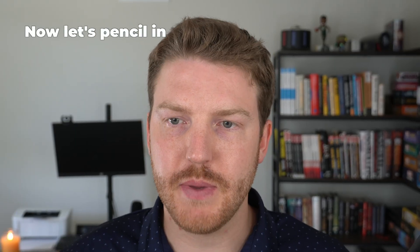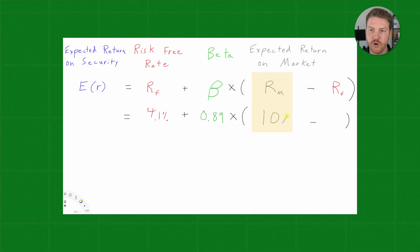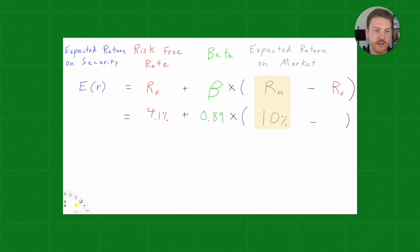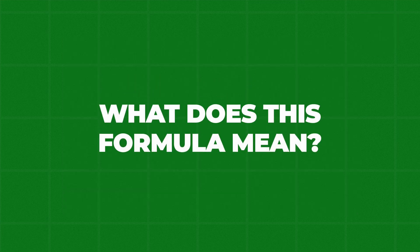Now, let's pencil in our expected 10% return on the market, and we have one final variable over here, which we already know as our risk-free rate of 4.1%, and now let's just talk about intuitively what does this formula mean.